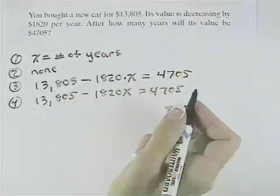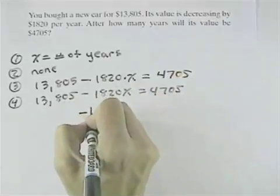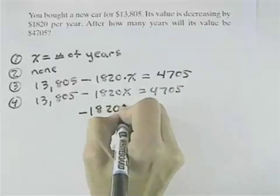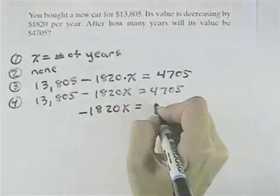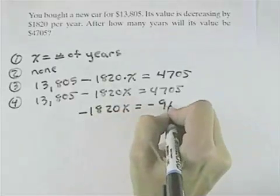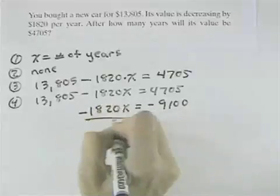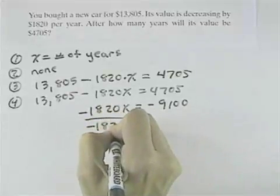So we'll subtract the $13,805 from both sides. That will leave $1,820X on the left. And when we subtract that value from the right, we'll get negative $9,100. Now we're going to divide both sides by negative $1,820.